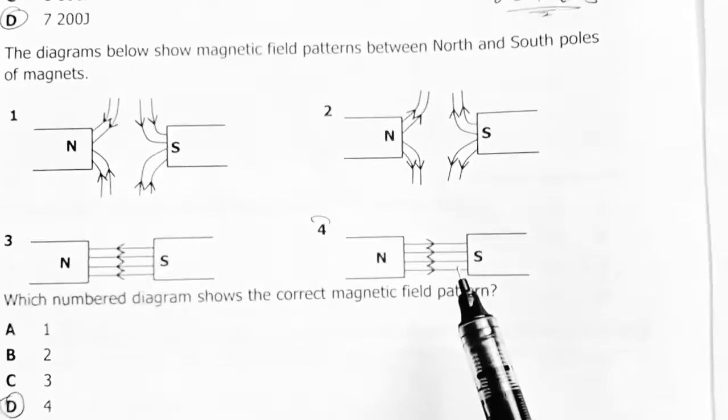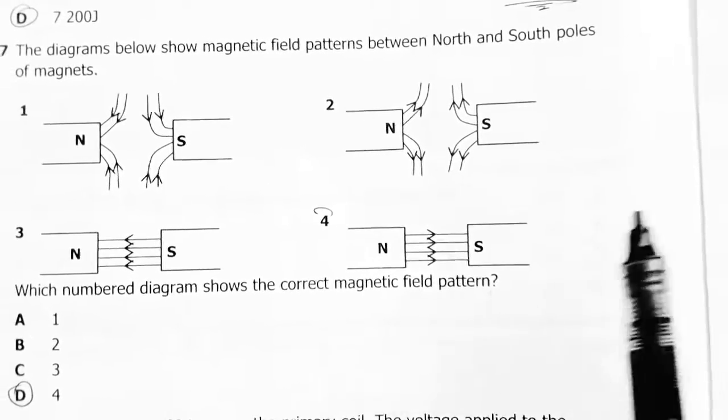So here, the arrows are pointing south, and the magnetic field lines are showing attraction.